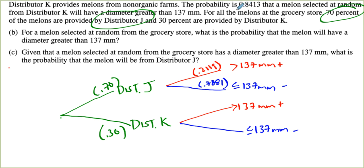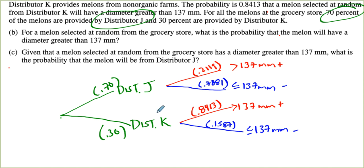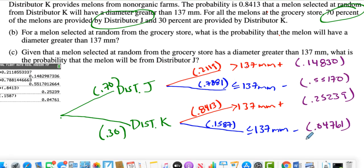And then they tell us in the problem that the probability is 0.8413 that a melon selected at random from distributor K will have a greater diameter. So that's got to go up here on the red branch. And then we need to find the complement. So we'll do 1 minus 0.8413. That'll find 0.1587. That will go on the blue branch. Now I think we have everything pretty much figured out. The next thing I'm going to do is multiply across the branches because we're going to find the probability that both of these events happen. So those products are here in purple. And I always take these numbers and add them all up. If you put them in your calculator and add them up, they equal 1. And that means this is a valid probability distribution. That was a lot of work. Now we can get on to answering the questions.